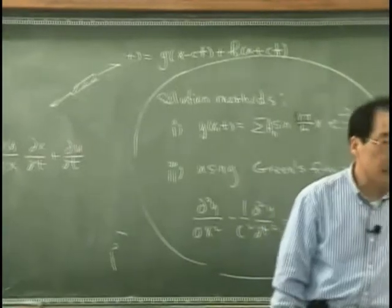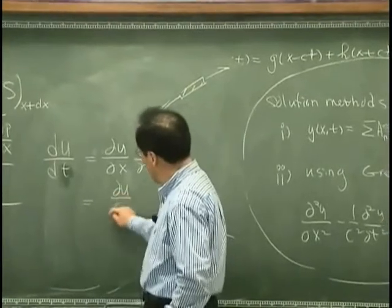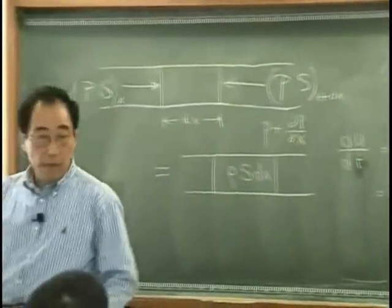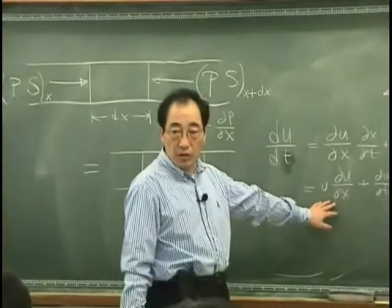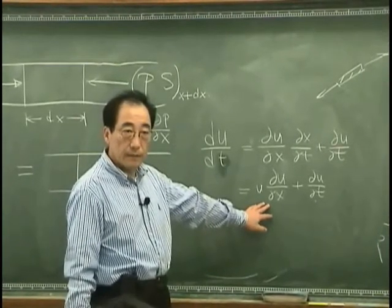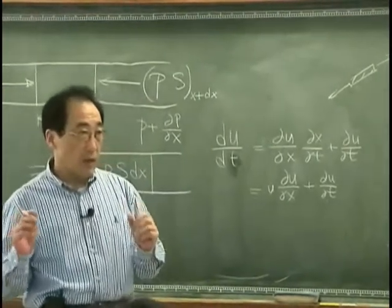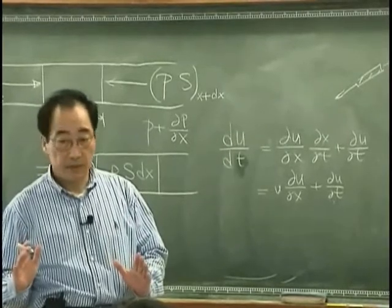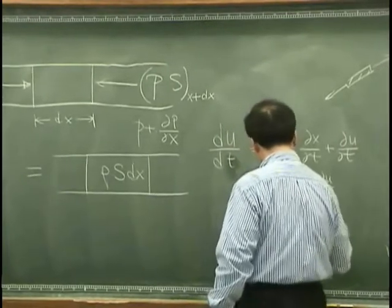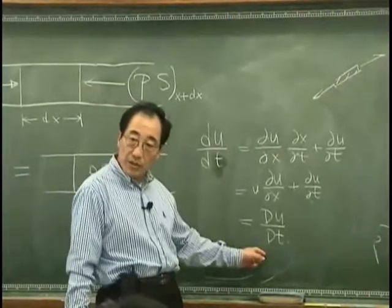That means I have two components of, sorry, DU/DT. Two type of acceleration. In fact, this is the force term, the so-called convection term, because we are handling the fluid that is compressible. And we normally call this total acceleration. Or we call DDT the total derivative, or material derivative.